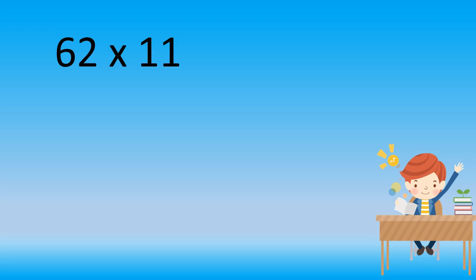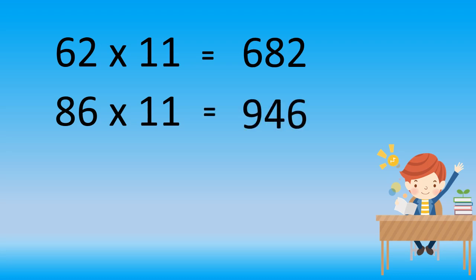Now you all try out. Come on. 62 multiplied by 11. The answer is 682. 86 multiplied by 11. The answer is 946. 35 multiplied by 11. The answer is 385.